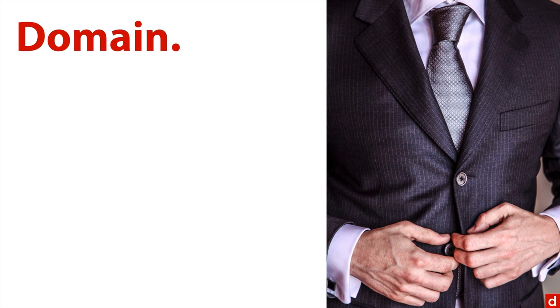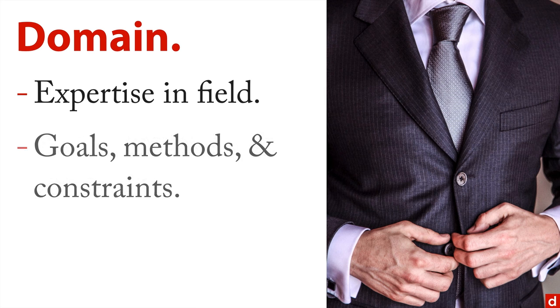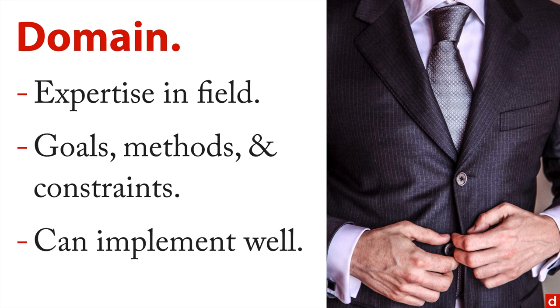And the third element of the data science Venn diagram is some sort of domain expertise. Think of it as expertise in the field that you're in. Business settings are common. You need to know about the goals of that field, the methods that are used, the constraints that people come across. And it's important because whatever your results are, you need to be able to implement them well. Data science is very practical and it's designed to accomplish something. And your familiarity with a particular field of practice is going to make it that much easier and more impactful when you implement the results of your analysis.